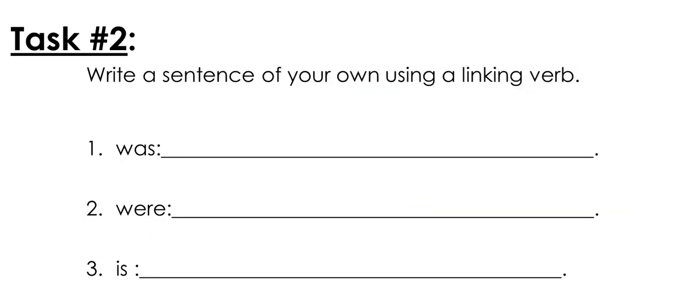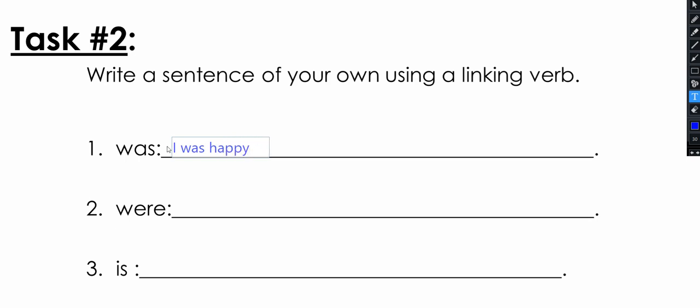Here you have to write a sentence of your own using linking verbs. You can pause the video and write your own sentences, then continue when you finish. All your answers will be different from mine. I'm going to write a sentence to help you check if your sentence is correct. I'll make a sentence with 'was': I was happy.